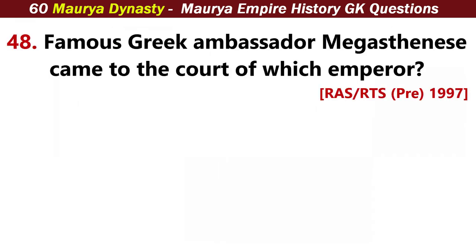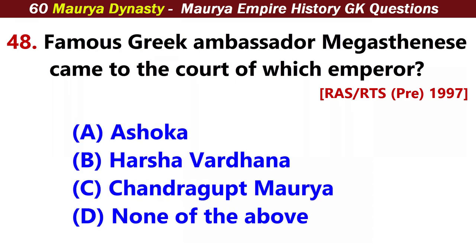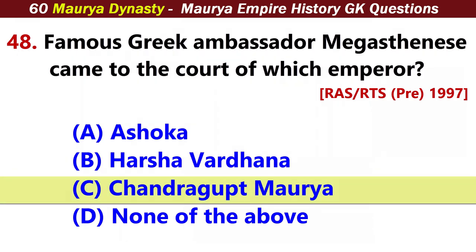Famous Greek ambassador Megasthenes came to the court of which emperor? Answer C: Chandragupta Maurya.